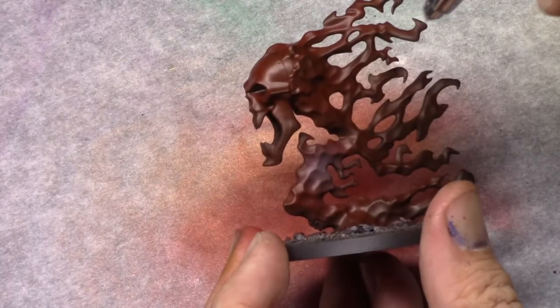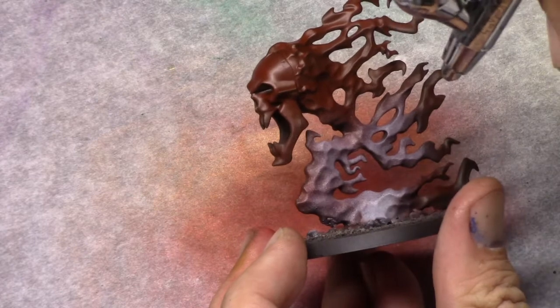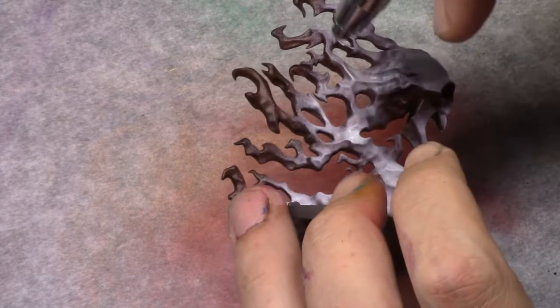Then I took white and I started to build up a lighter tone on the model. Everything that I now paint white will become a more vibrant red in the next stage.